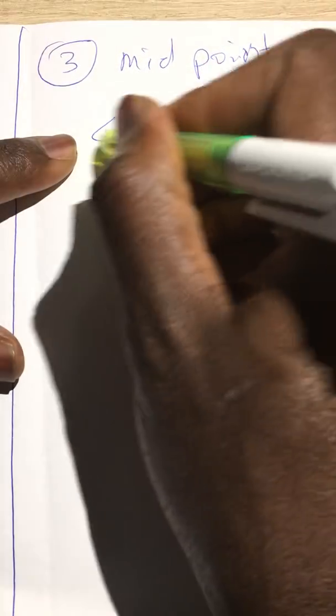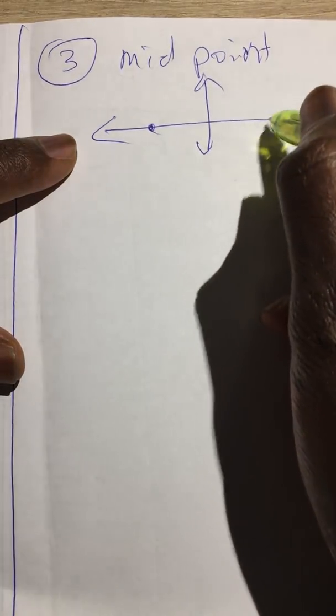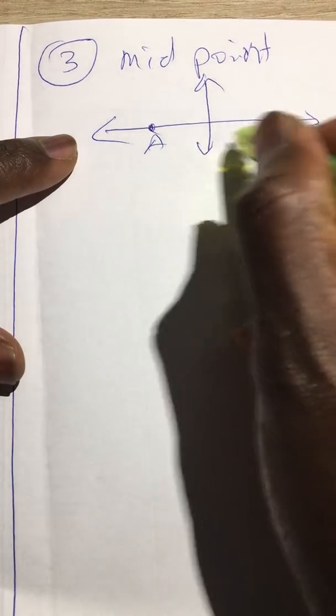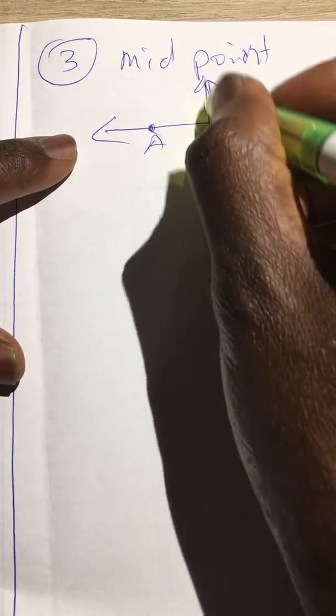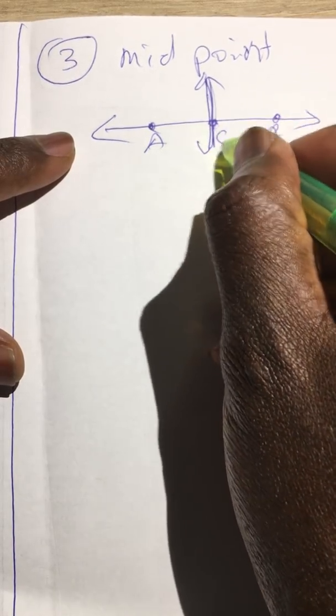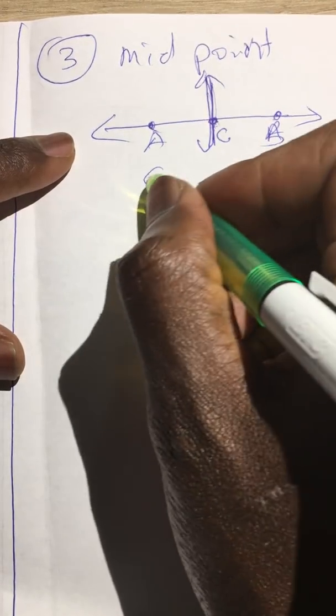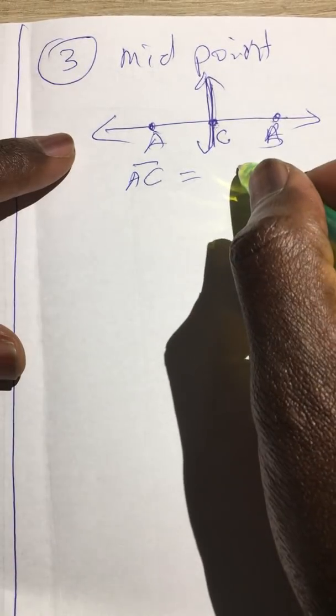The other type of point is the midpoint. Midpoint is the point that divides a segment into two equal parts. Let's say we have a line segment AB and we have a bisector there which is perpendicular, so that we have another point at C where this line cuts segment AB, such that segment AC will be equal to segment CB. And we call that point at C as our midpoint.